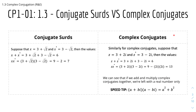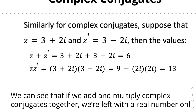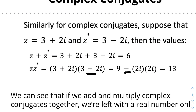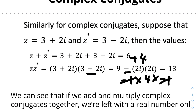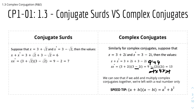Similarly for complex conjugates, suppose z = 3 + 2i and z* = 3 - 2i. Then z + z* = 6 because the imaginary parts cancel out — you just add the real parts. And z × z* = 13: the cross terms cancel, and the last term is 2i × (-2i) = -4i² = -4 × (-1) = +4. So 9 + 4 = 13. When we add or multiply complex conjugates together, we're left with only a real number.